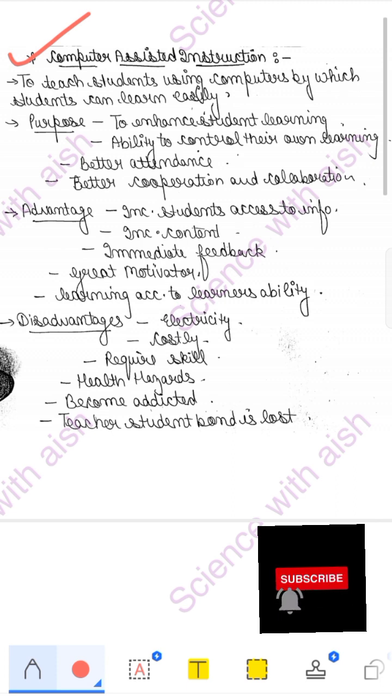So let's first start with Computer Assisted Instructions. If you want to read a lot about this, we have a Programmed Instructions topic in 4th Semester Education Technology and ICT, 3rd unit. The first topic is Programmed Instructions. There are three types: Linear, Branched, and Computer Assisted. You can also read it from there or see it from here.